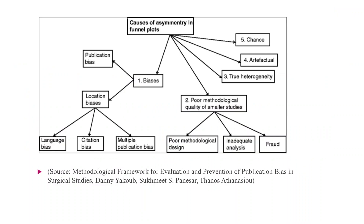There are several types of biases: publication bias, location bias, language bias, citation bias, and multiple publication bias. Then there is poor methodological quality of smaller studies — that is, design issues, inadequate analysis, fraud — then true heterogeneity, and artifactual chance. This classification is given by Danny Yakko, sourced from the methodological framework for evaluation and prevention of publication bias in surgical research.